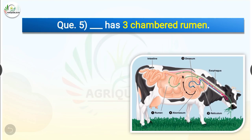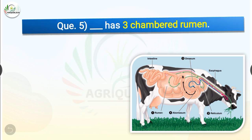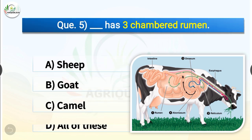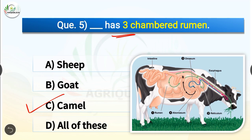Question number 5. Dash has a 3-chambered rumen. The options are sheep, goat, camel or all of these. The correct answer is option C, camel. So camel has a 3-chambered rumen. Generally ruminants have a 4-chamber stomach — for example cattle, sheep, goat, deer — except camel, which has a 3-chambered rumen.